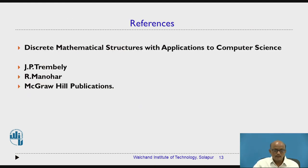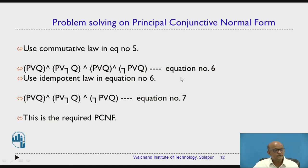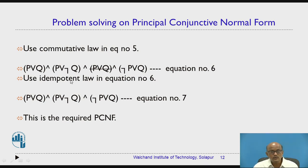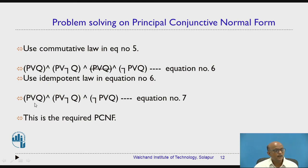In equation number 6, we used the idempotent law and commutative law. Q or negation P was converted into negation P or Q using commutative law, and Q or P was converted into P or Q. The first and third terms were identical, and using P AND P equals P, the equation reduces to three terms: P or Q AND P or negation Q AND negation P or Q. This is the required PCNF for the given problem statement.